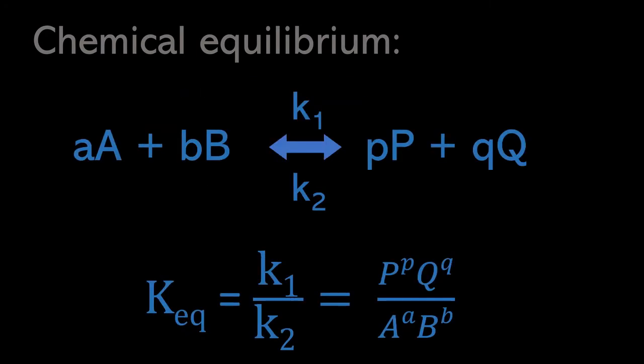Here is a generalized form of the equilibrium constant for a general equation, where the product and reactant species — with multiple species represented — are raised to the power of their stoichiometric amounts.